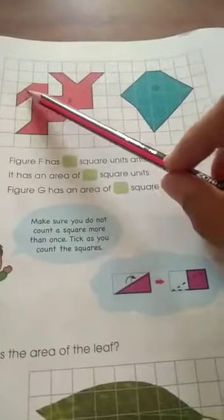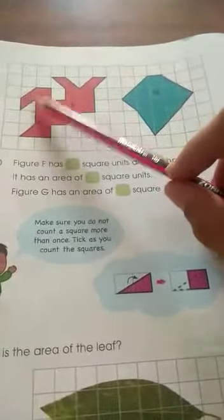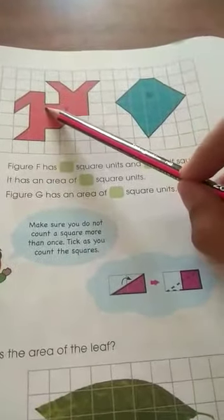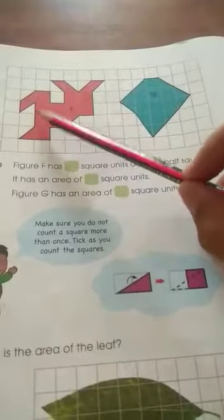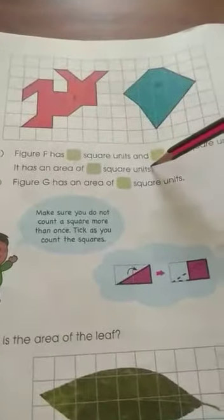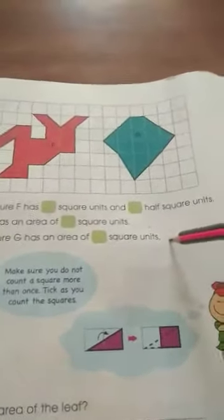I have told you, half and half means make it 1. So, you will count it like this. Half and half make 1. And then you will count it like this. How many square units are there? Count it and mention it here and here. This is very simple and easy and I hope you understand. And you can easily do it by yourself.